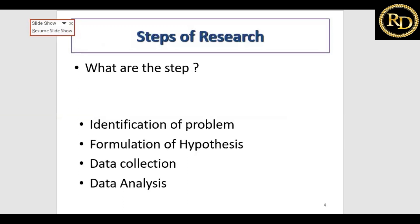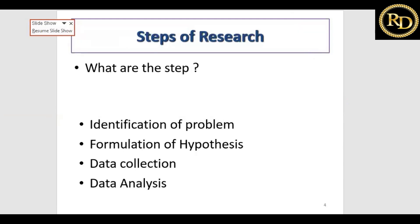You need to follow these steps during research: identification of the problem, formulation of the hypothesis, data collection, and data analysis. When going for any research, you first need to identify what kind of problem you will be addressing. Then if you have a set of two or three objectives, you will try to write the formulation of the hypothesis — the statistical hypothesis.